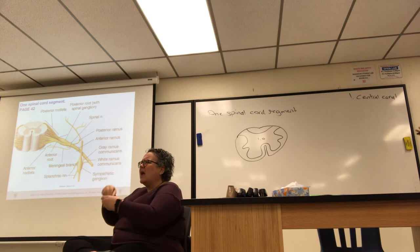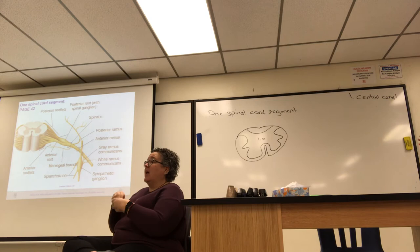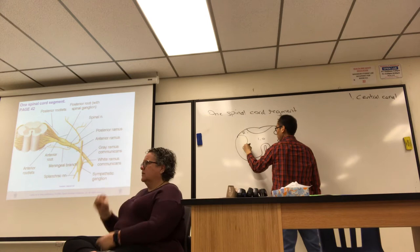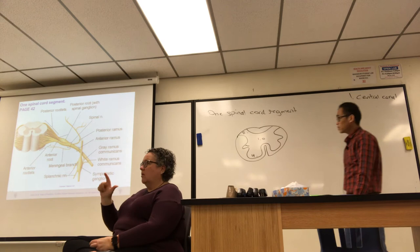Looking at the cross-section, the inside butterfly shape is gray — that is the gray matter — and all around it is white matter. The gray matter is arranged into horns: dorsal, lateral, and ventral horns.